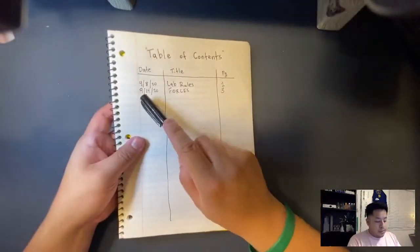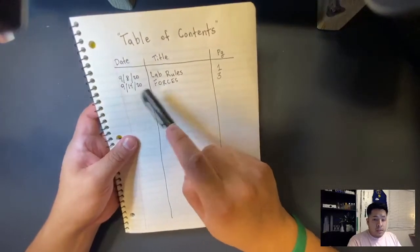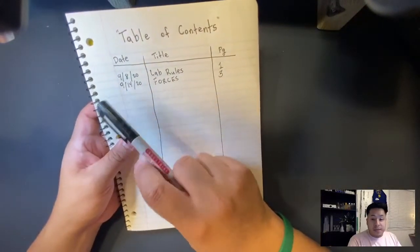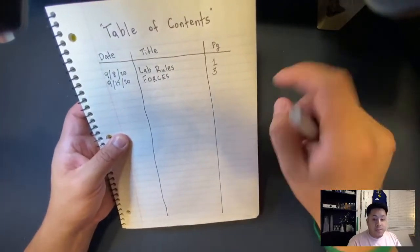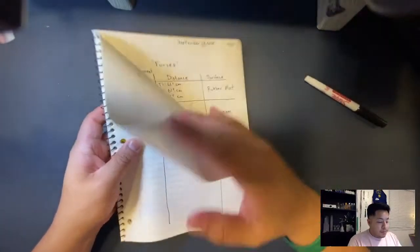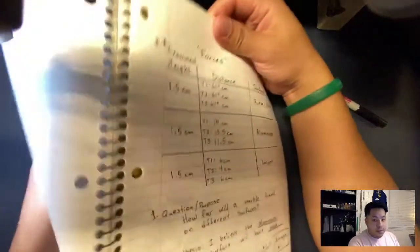The table of contents is going to be forces. Put today's date, whatever date you're watching it, and it's going to be 9-14-20 for the day I'm doing it, and your page number. Let's go ahead to page three, and there it is.